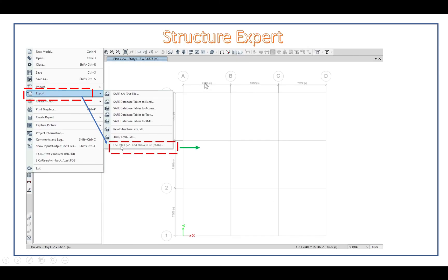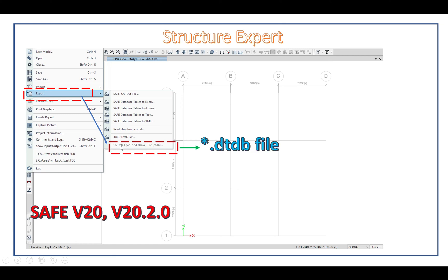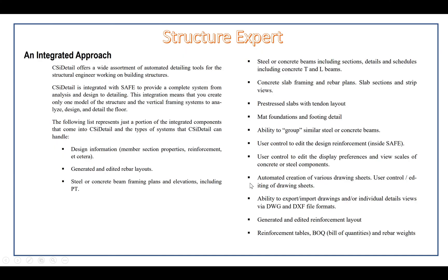In CSI Detail you can open the export file. The export includes design information, member section, property, reinforcement, and general edit rebar layout. You can export data for steels, rebar, and PT elements.